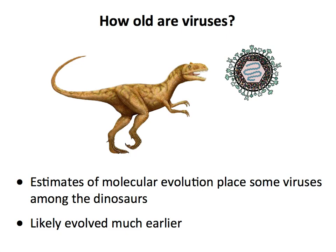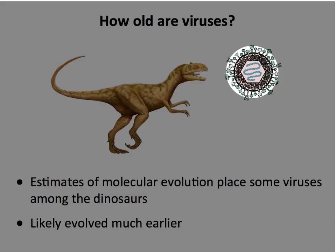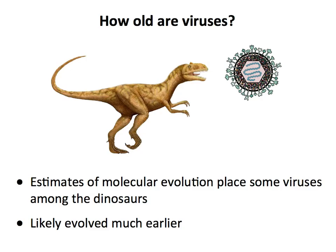How old are viruses? By sequencing genomes we can estimate rates of molecular evolution, we can make phylogenetic trees of viruses, and we can place them among the dinosaurs. In fact, one of the first viruses to be placed there was a herpes virus. So dinosaurs had cold sores, probably. But viruses probably evolved much earlier.